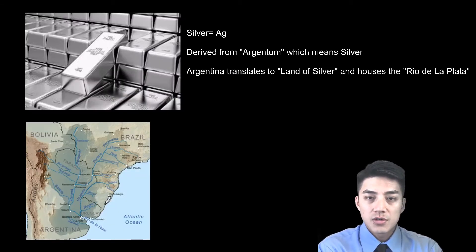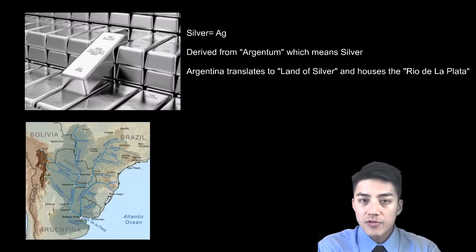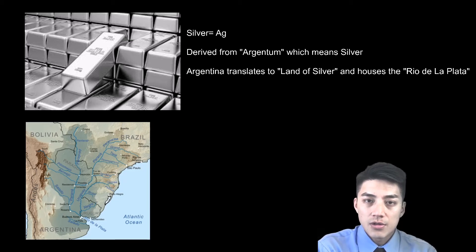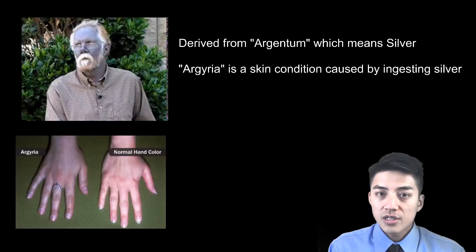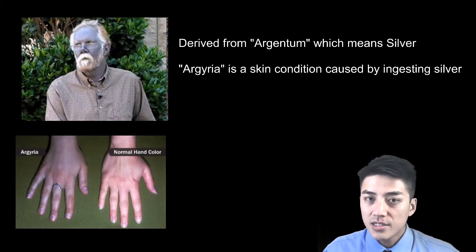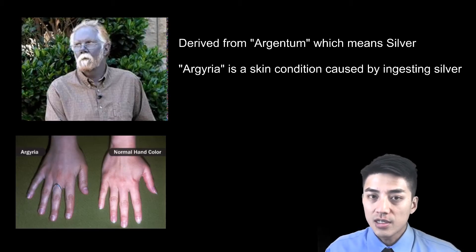The symbol for silver is Ag, which is derived from the Latin argentum, which translates to silver. The country of Argentina literally translates to the land of silver, and they call their river the Rio de la Plata because they believed that river used to house a lot of silver. Argyria is a really similar-sounding word to argentum — again meaning silver — and argyria is a skin condition caused by ingesting silver, drinking it, eating it. It causes your skin to turn blue.